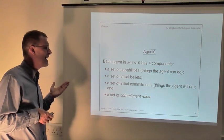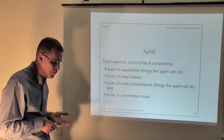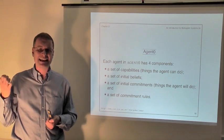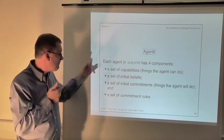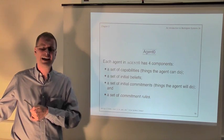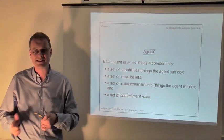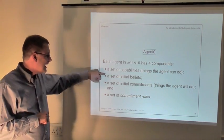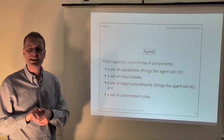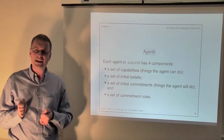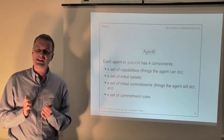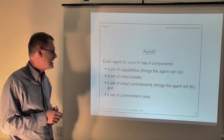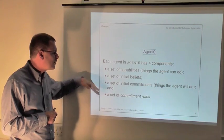So what do you have to do to program an agent in Agent Zero? You have to give it four things. The first is a set of capabilities — basically exactly the actions we've been talking about, encoded as subroutines or methods in the language. The second is a set of initial beliefs, which describe to the agent what it thinks the world looks like when it starts executing — the initial state of the environment.